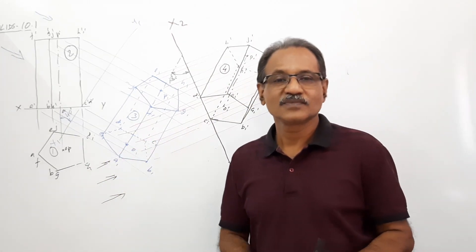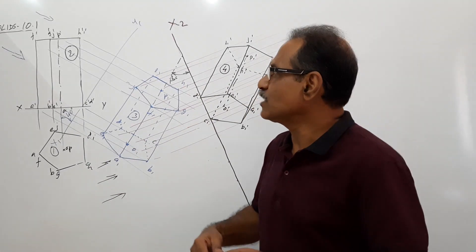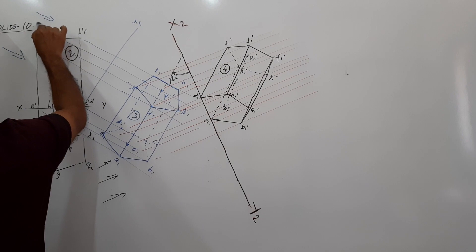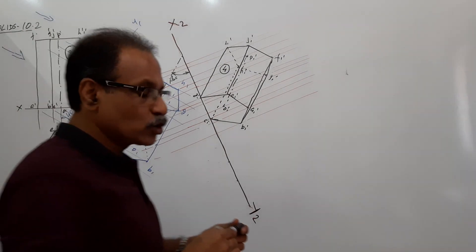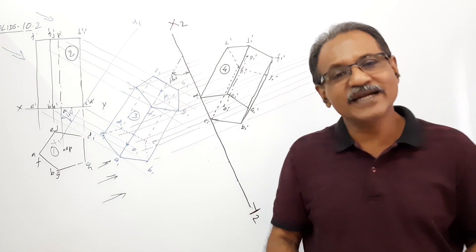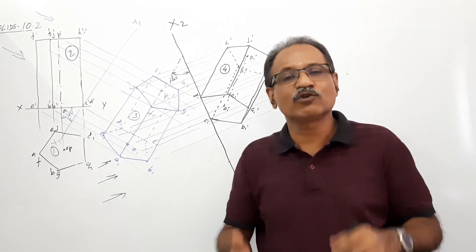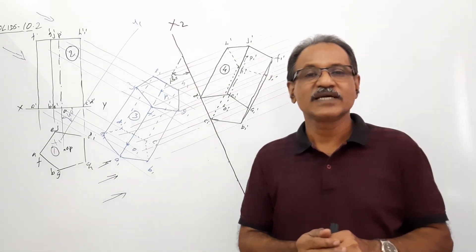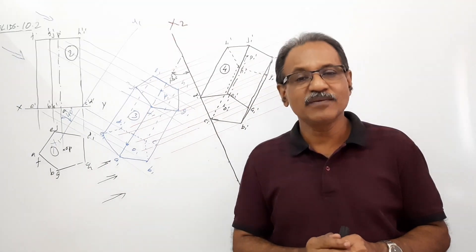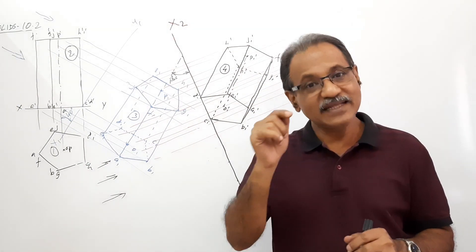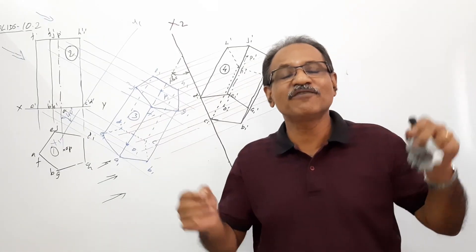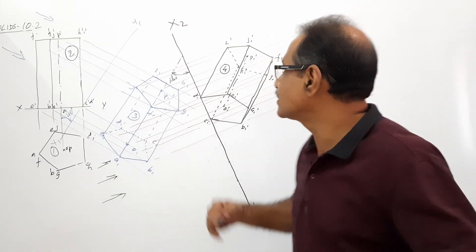Hi students, in problem 10.2, the pentagonal prism is resting on HP on a side of base. The axis makes 40 degrees to HP, and the axis makes 35 degrees to VP. What is 35 degrees?